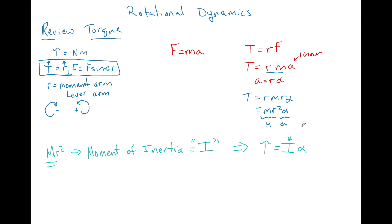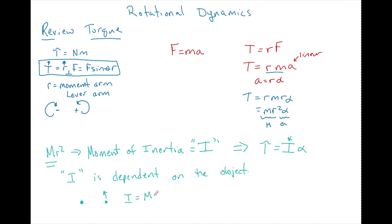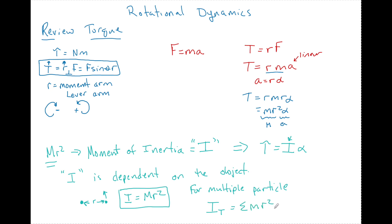Remember Newton's first law — an object in motion remains in motion until stopped by an outside force. The same holds true here: a mass has resistance to change whether it's moving or not, and an object also has resistance to spinning whether it's moving or not. That's what I is. I is dependent on the object. For a single mass spinning around a center of mass, I equals M R squared, where R is the distance from the center of mass. For multiple particles spinning, the total moment of inertia is the sum of all the M R squareds.